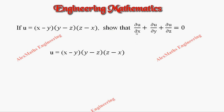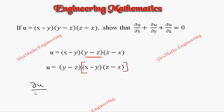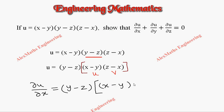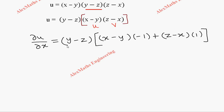We are finding ∂u/∂x — other than x are constant, so the term (y minus z)(z minus x) is purely constant. I've rewritten the term by taking the purely constant term first. Since this is constant we write it as is, then follow the product rule for u and v: first term (x minus y), differentiation gives minus 1, plus second term (z minus x) as is, and differentiation of (x minus y) is 1. So we finish the partial derivative with respect to x.